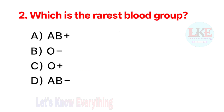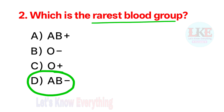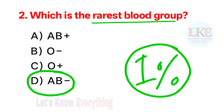Question number 2: which is the rarest blood group? Right answer: AB negative. Just 1% of the world population has this blood type, according to Star Health Insurance.